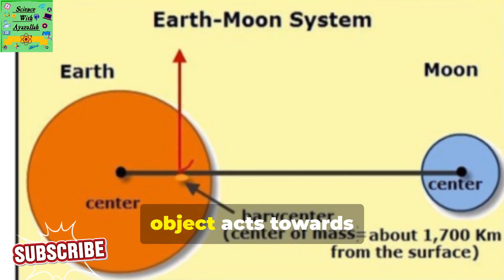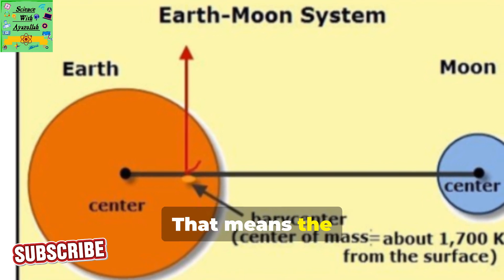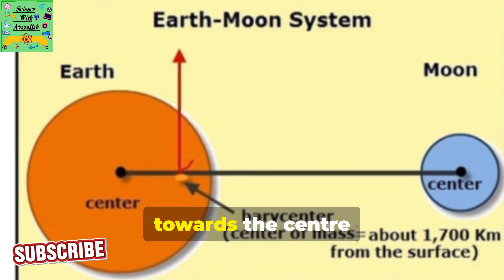The force of gravity from an object acts towards the center of the object. That means the object falls in a line that points towards the center of the Earth.